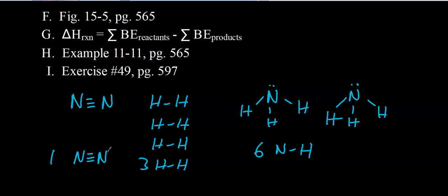Let's do practice problem number 49, parts B and C on page 597 — skip part A since it's the same as the book example. Draw Lewis structures, count how many of each bond there are in the reactants and in the products, then take the bond energies of the reactants minus bond energies of the products to get your answer.